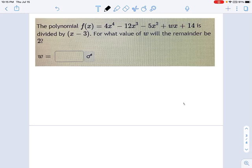So we're going to use the remainder theorem in a kind of interesting way. It gets turned around on its head a little bit in this problem. What this problem asks is the polynomial f of x, this big long thing, is divided by x minus 3. For what value of w will the remainder be 2? So let's break that down a little bit. What this is asking us to do is use the remainder theorem and then figure out what w is.